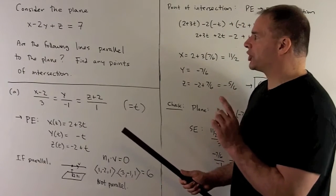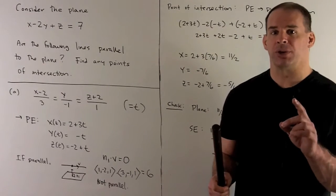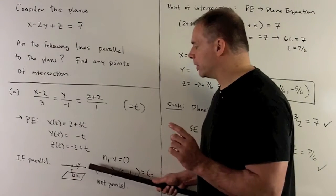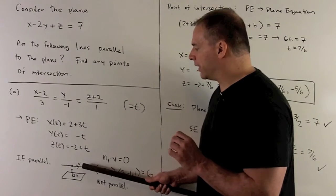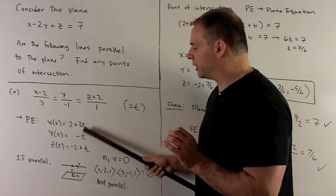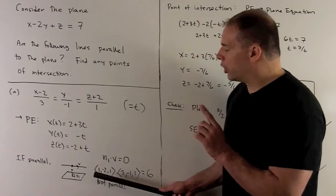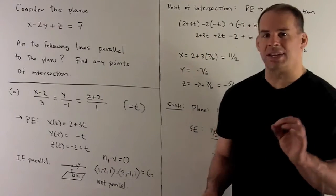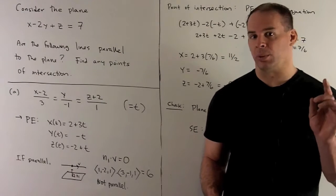The first thing we want to check is whether our line is parallel to our plane. If we look at the picture, we have the direction of our line, denoted by vector v, and the normal direction to the plane — that's the perpendicular — denoted by vector n1. If we're parallel, then n1 and v are perpendicular, so the dot product of n1 and v equals 0.